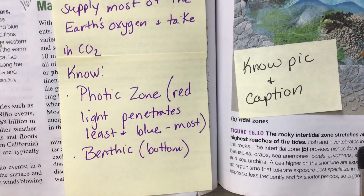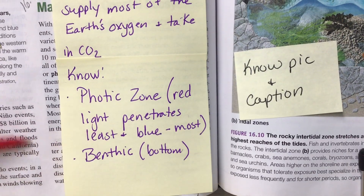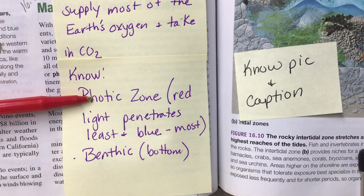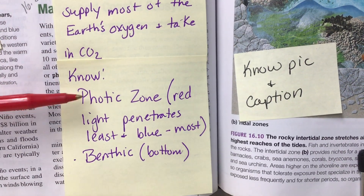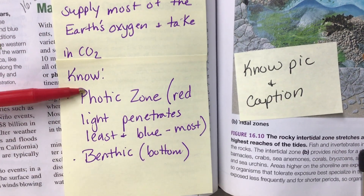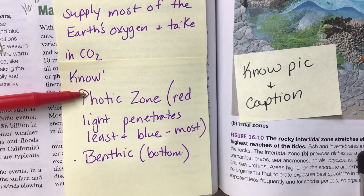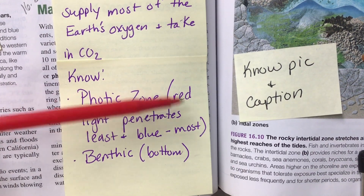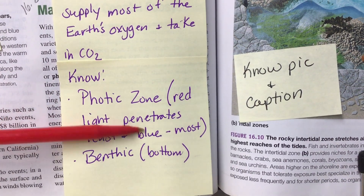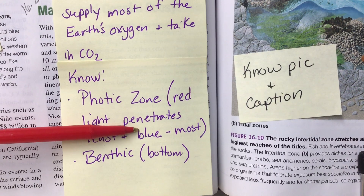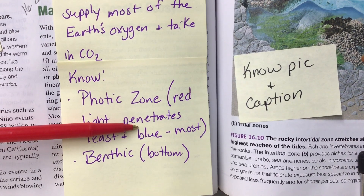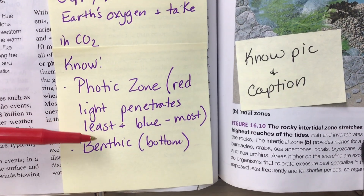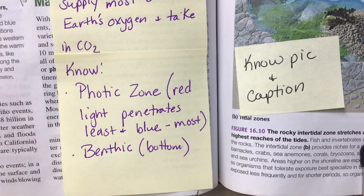On this page under the sticky note are some terms. You need to know the photic zone and the benthic zone. The photic zone is the light zone — red light penetrates the least and blue penetrates the most down in the ocean. The word benthic means bottom, so we'll use that term: benthic.